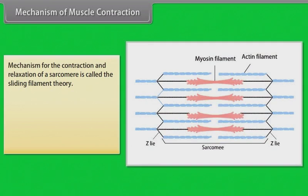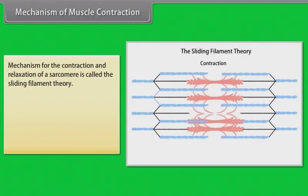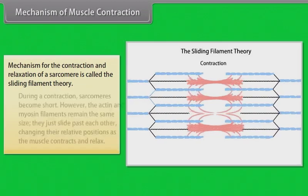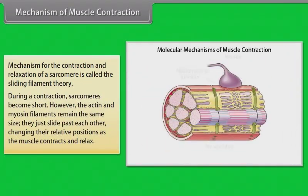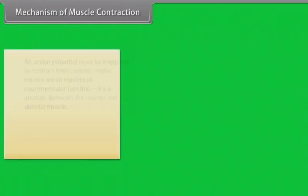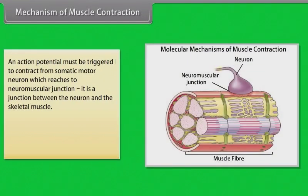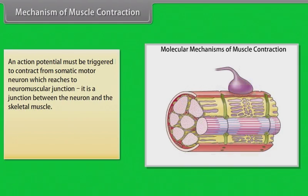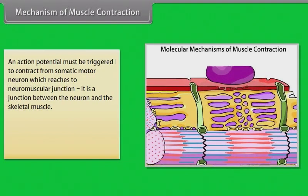Mechanism of muscle contraction: the mechanism for the contraction and relaxation of a sarcomere is called the sliding filament theory. During a contraction, sarcomeres become short; however, the actin and myosin filaments remain the same size — they just slide past each other, changing their relative positions as the muscle contracts and relaxes. An action potential must be triggered from a somatic motor neuron, which reaches the neuromuscular junction.